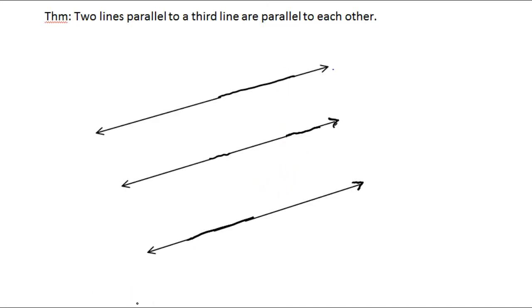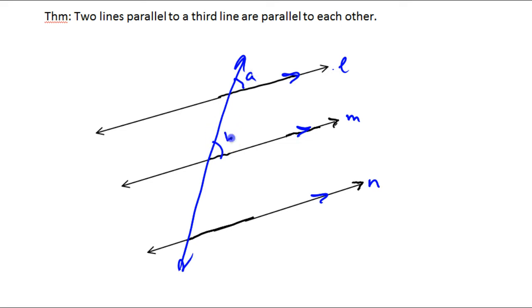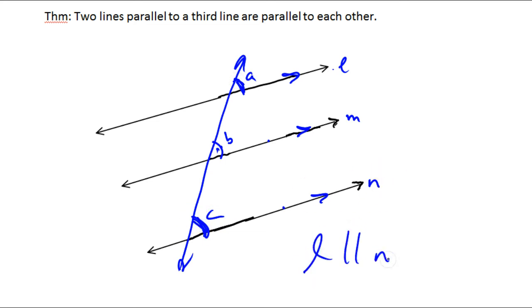This theorem says that two lines parallel to a third line are parallel to each other. Let's draw a transversal. I've got line L and we'll make it parallel to M, and here's line N, and line N is also parallel to line M. So if line L is parallel to M, then angle A is congruent to angle B. And if N is parallel to M, then angle B is congruent to angle C. So all three of these angles are congruent, which means angle A is a corresponding angle with angle C, which means line L is parallel to line N.